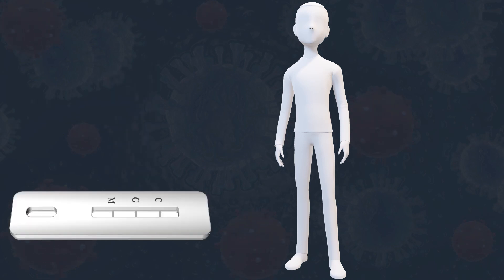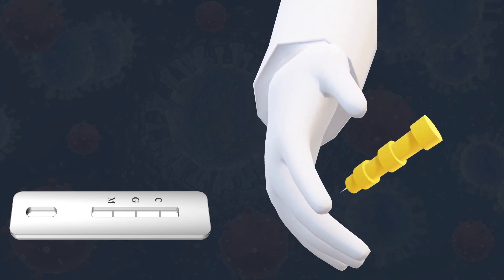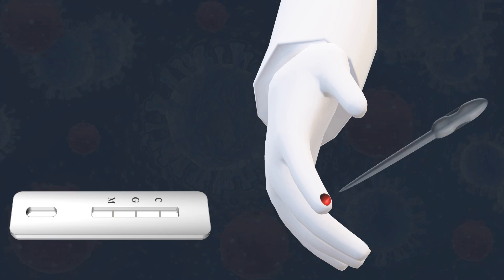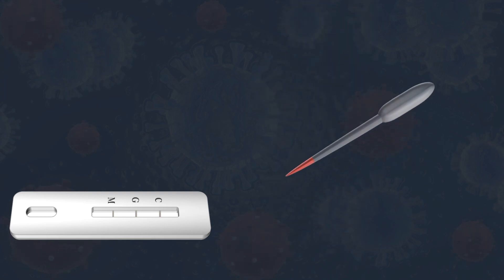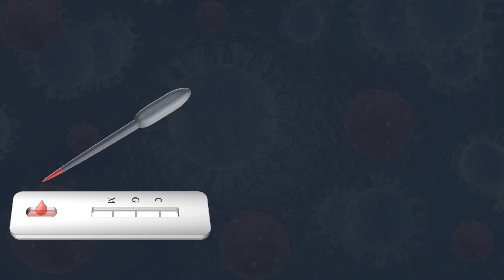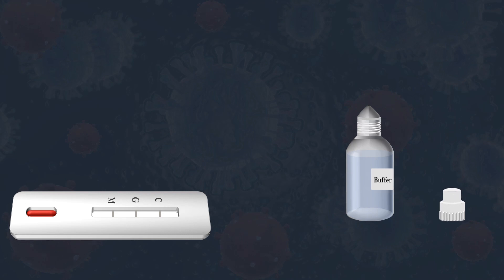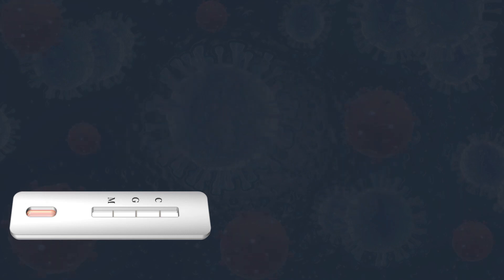To perform a test, the cassette is placed on a level surface at room temperature. Then, one of the fingers is punctured with a lancet, and a plastic dropper is used to take several drops of blood. Then one drop is added into the cassette sample well. Finally, drops of a buffer are added into the sample well to facilitate the test, and the cassette is incubated for 10 minutes.